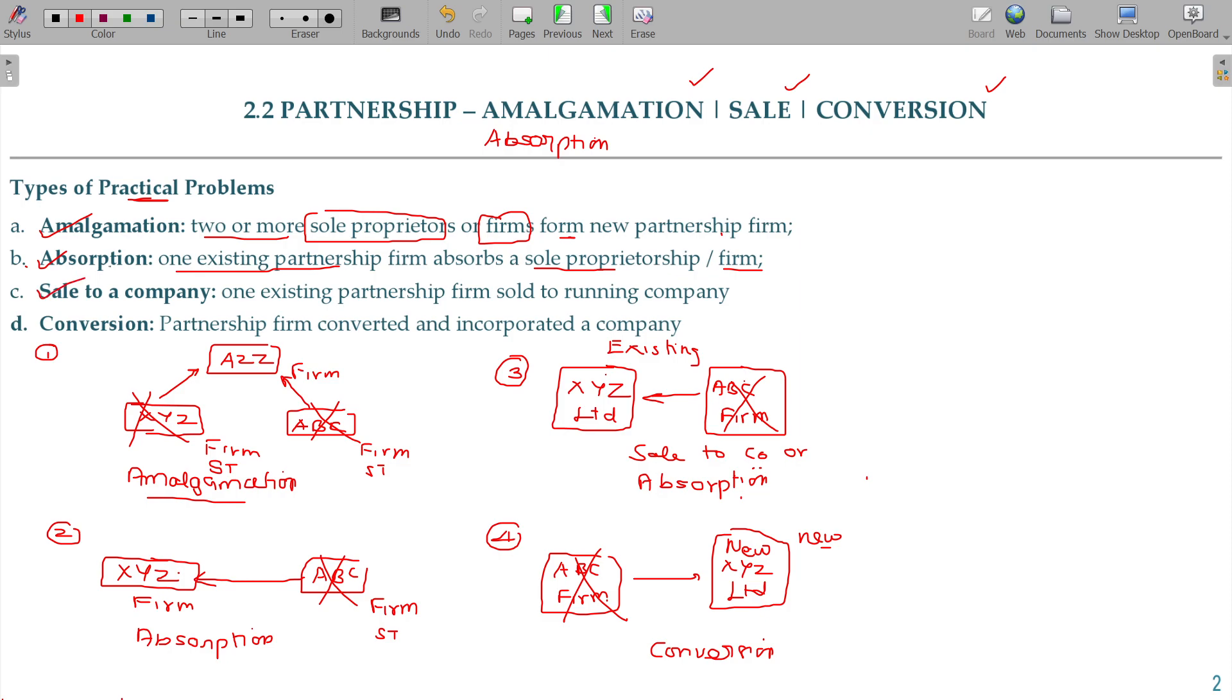Sale to a company: one existing partnership firm sold to running company. The business is sold to a running company. The last variant being conversion. Partnership firm is now converted. The same management team, together as a company with name change, following the process. That is called conversion. These are the processes.